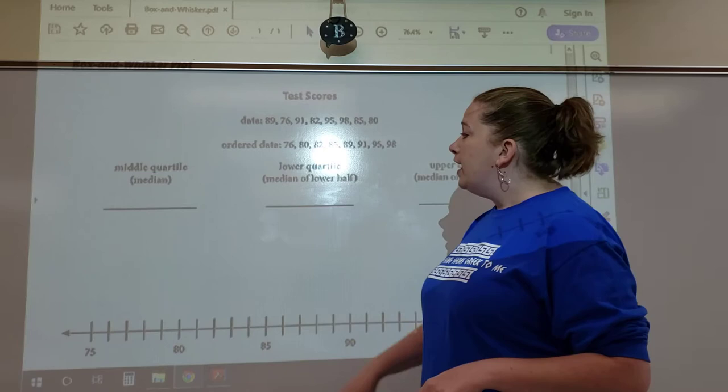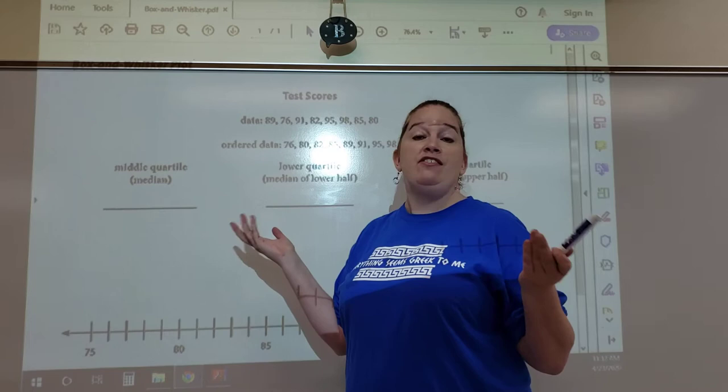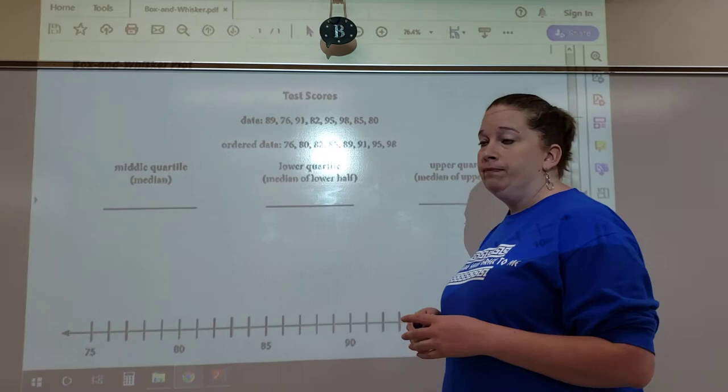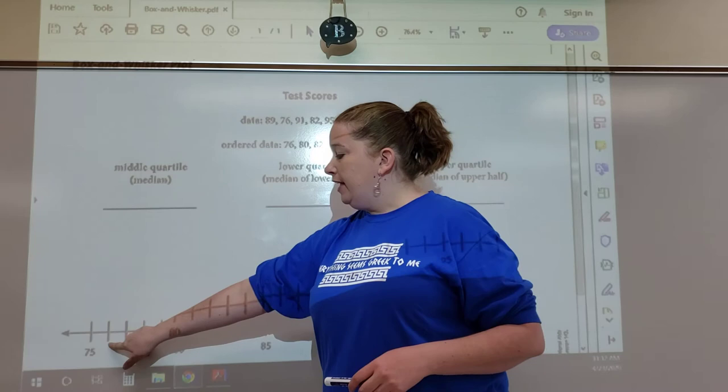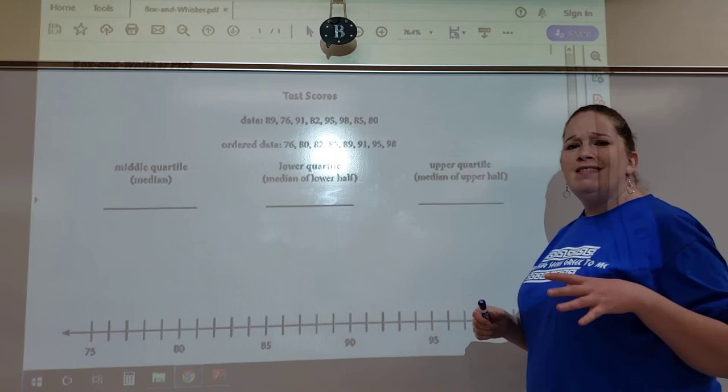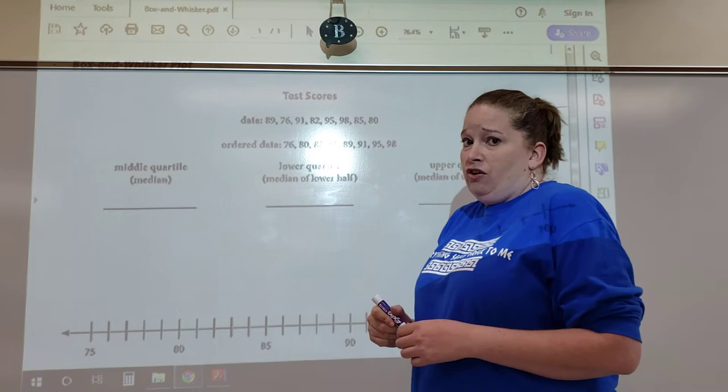Here's how you figure out a box and whisker plot. The very first thing you need to find is your middle quartile, which means the median of your lowest score and your highest score. Our lowest score is 76, and our highest score is 98.